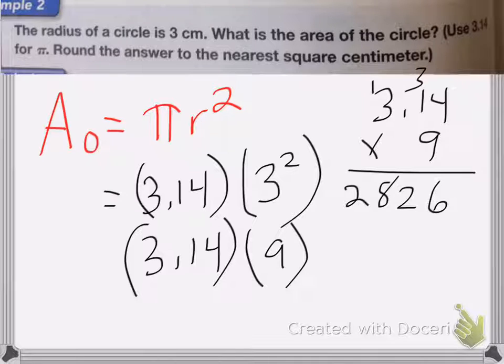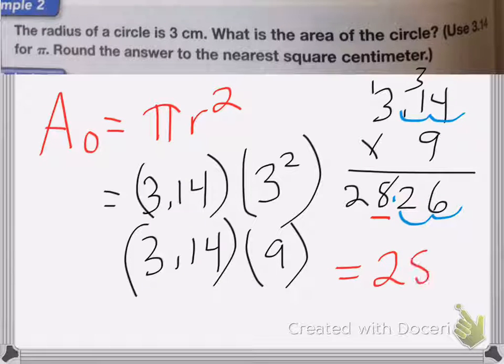Now we're going to count over the decimal place. 1, 2, 1, 2. So my answer is, and it wants us to the nearest square centimeter. So the nearest square centimeter is going to be this number, my 8. So I'm going to look, am I going to round it up or down? It's going to stay the same. So that is equal to 28 centimeters squared.